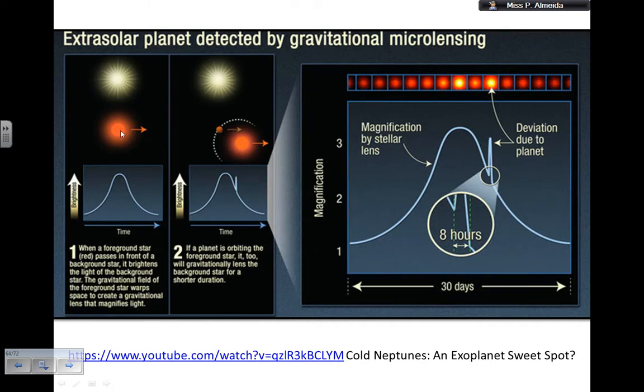So this is a star and this is a background star, and this is the brightness of the star in the background over time. So if I have a star passing in front of a background star, the brightness of the star at the back increases. Because the gravitational field of the foreground star, the red one, is going to warp the space and time and create a gravitational lens effect which magnifies the light of the star.